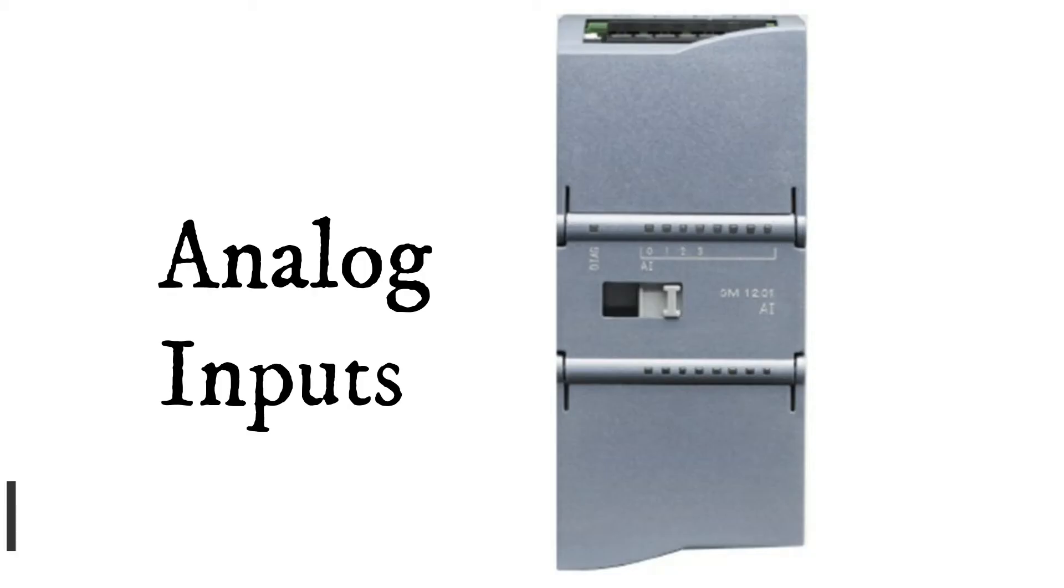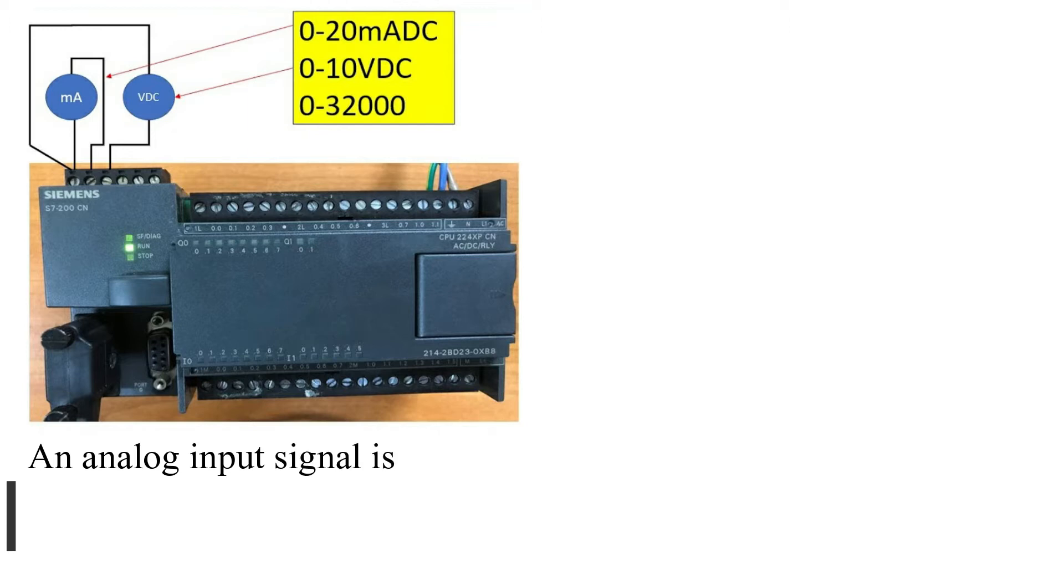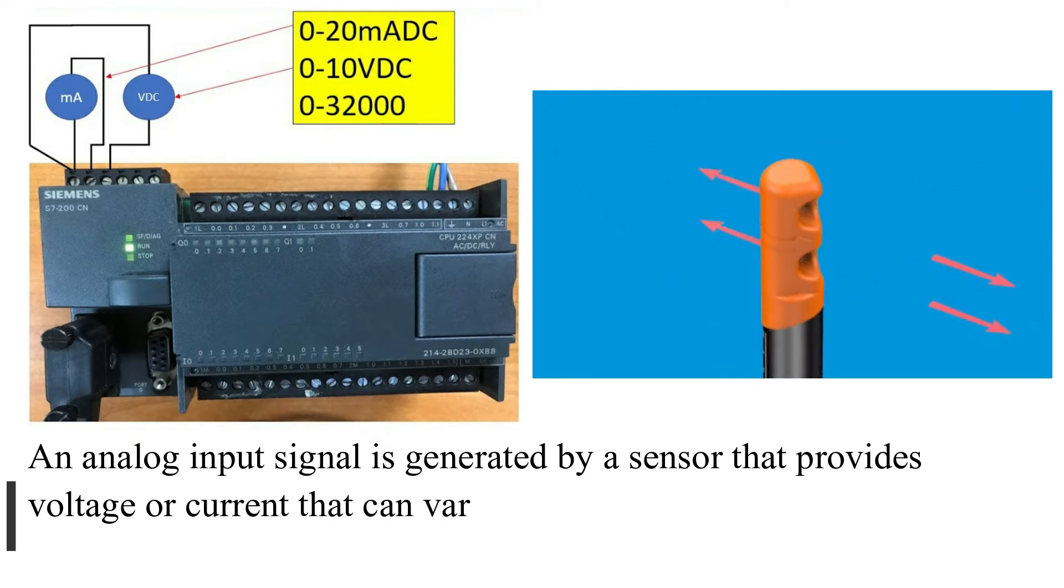Analog Inputs: An analog input signal is generated by a sensor that provides voltage or current that can vary within a range such as 0 to 10 volts or 4 to 20 milliamps.